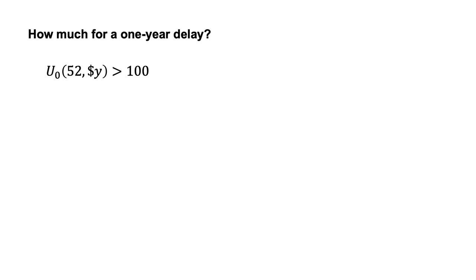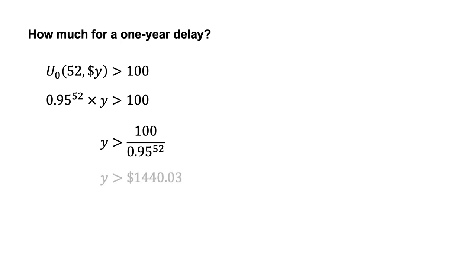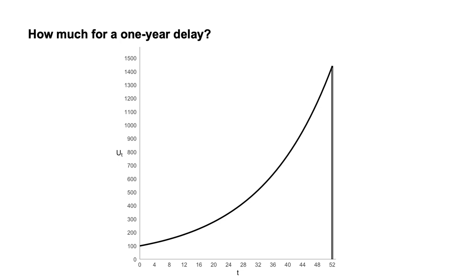She will prefer y dollars in 52 weeks if u₀(52, y) is greater than 100. This implies 0.95⁵² times y is greater than 100, which implies y is greater than 100 divided by 0.95⁵², which implies y is greater than $1,440.03. Brenda would be willing to wait a year for payment if she was paid more than $1,440.03. The following figure visualises this: the bar at t equals 52 represents the $1,440.03 minimum payment, and the line back to t equals 0 shows that its discounted utility equals the utility of $100 today.